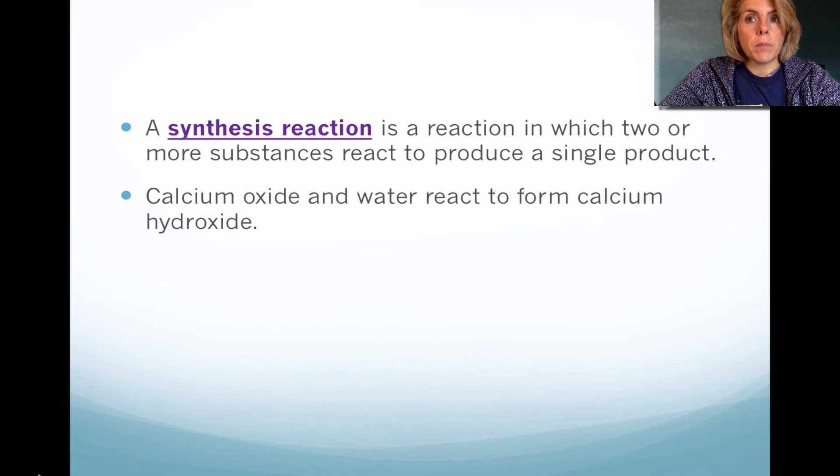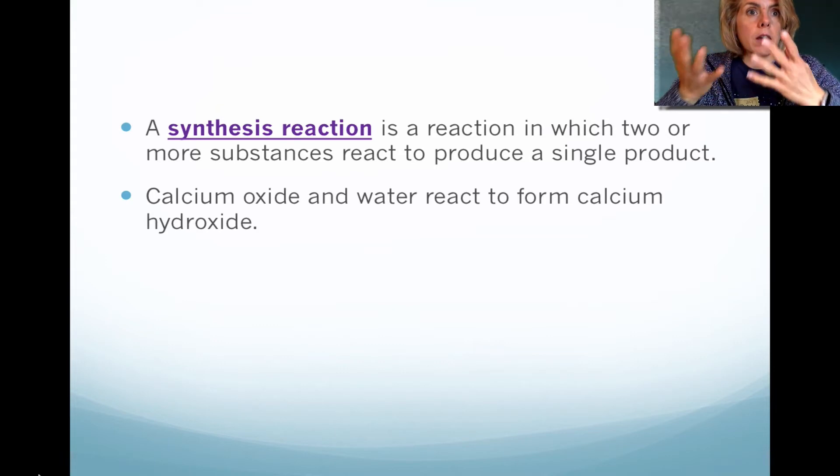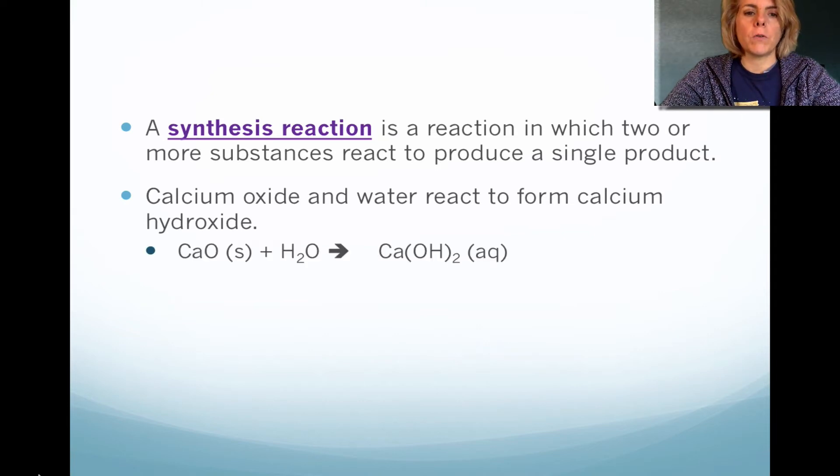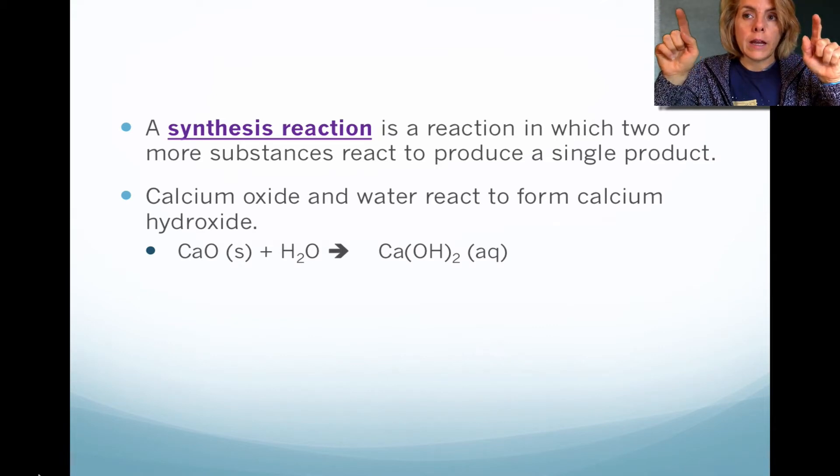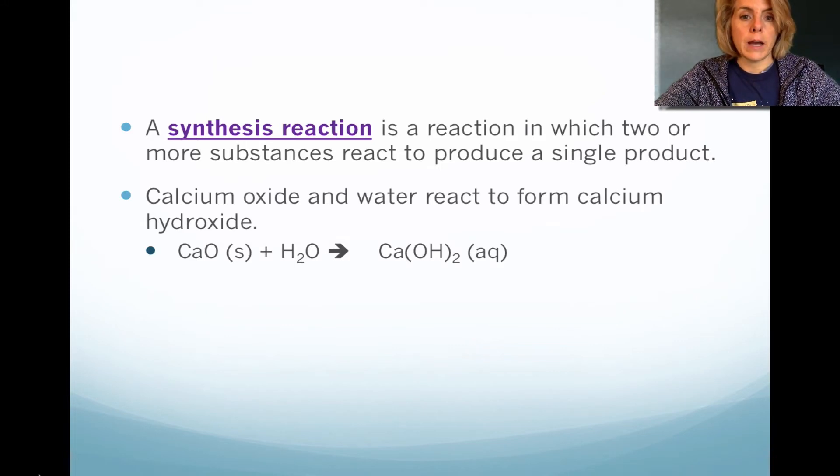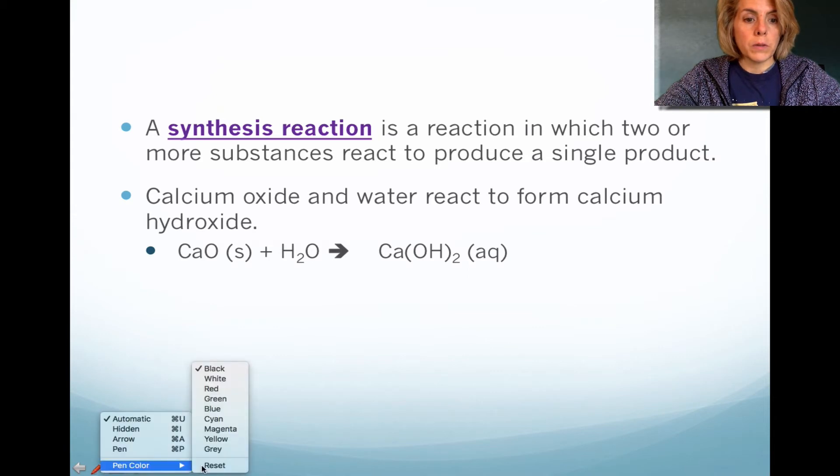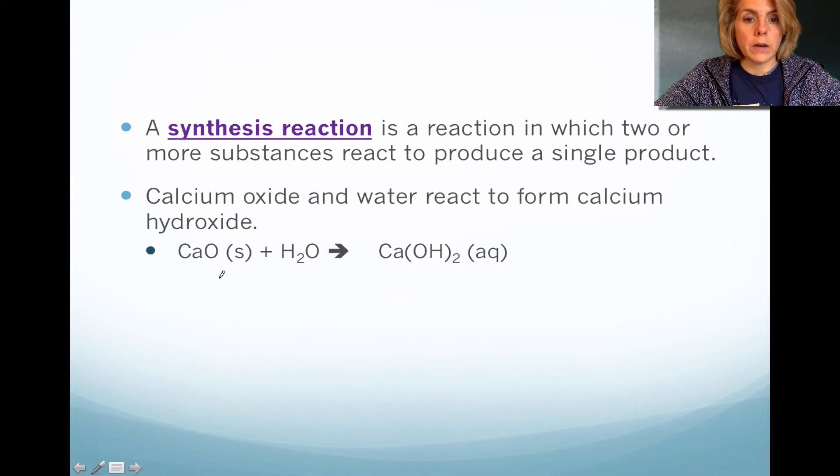Here we have an example of calcium oxide and water to form calcium hydroxide. Once again, we're going to take the chemical names and convert them into formulas. So here we have CaO, and you've got to remember that the cations, when they do the criss-cross, they actually reduce down to a subscript of one for calcium oxide. Please remember that there's an understood one here and here. We combine that with water, and notice that we only have one product. This is considered synthesis.